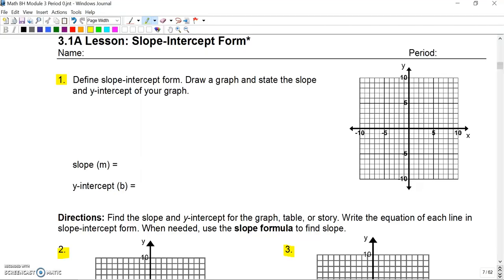Let's take a look at number one. It says define slope-intercept form, draw a graph, and state the slope and the y-intercept of your graph. Slope-intercept form is that y equals mx plus b equation that we derived at the end of module two. We have our slope and we have our y-intercept, hence why it's called slope-intercept form.